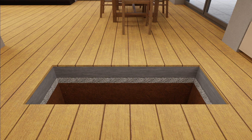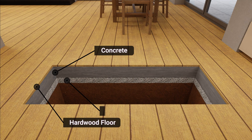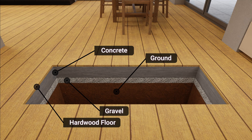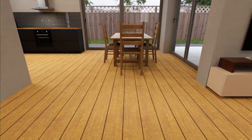Conduction can also happen through the floors, and floors come in a few different variations and can even have insulation. Like ceilings, floors can separate the conditioned space from garages, basements, and even neighbors.